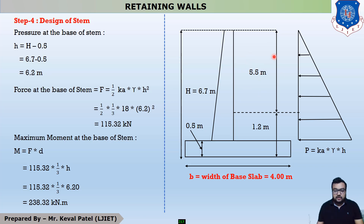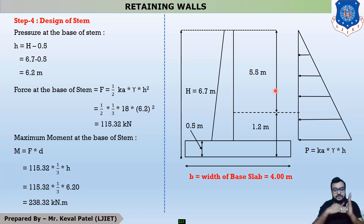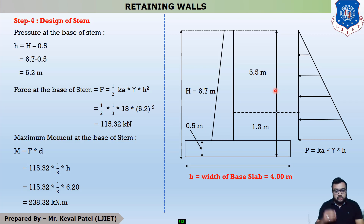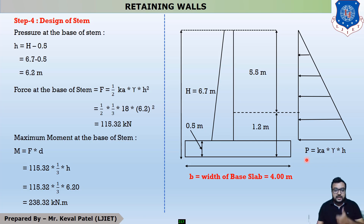The backfill is acting a force on the retaining wall as active earth pressure, pushing away from the fill side. Whenever a component acts with force pushing away, it is called active earth pressure. The equation of pressure is K × γ × h, where K is the coefficient of active earth pressure, γ is the density of soil, and small h is the height of the stem, which is 6.2 meters.